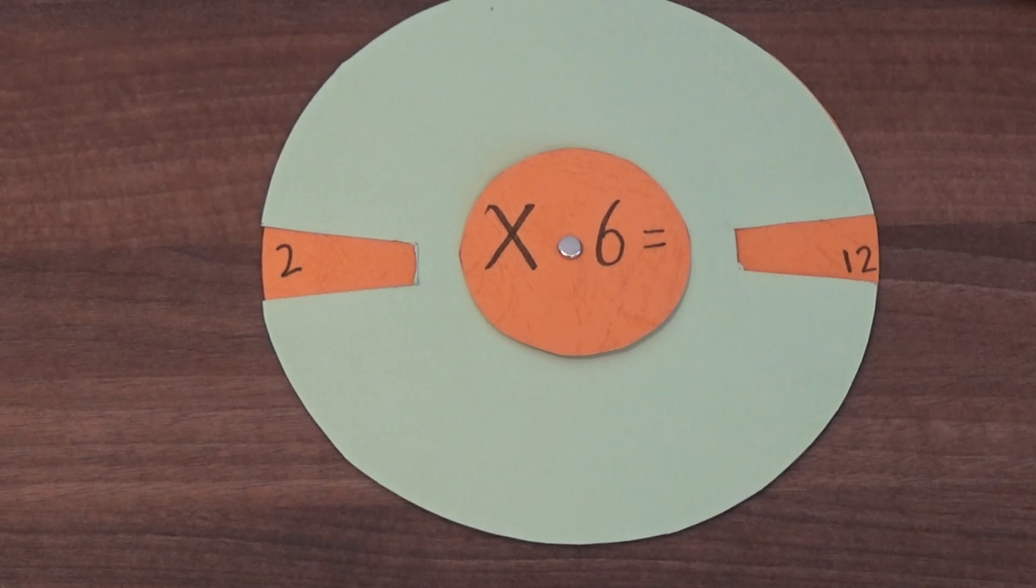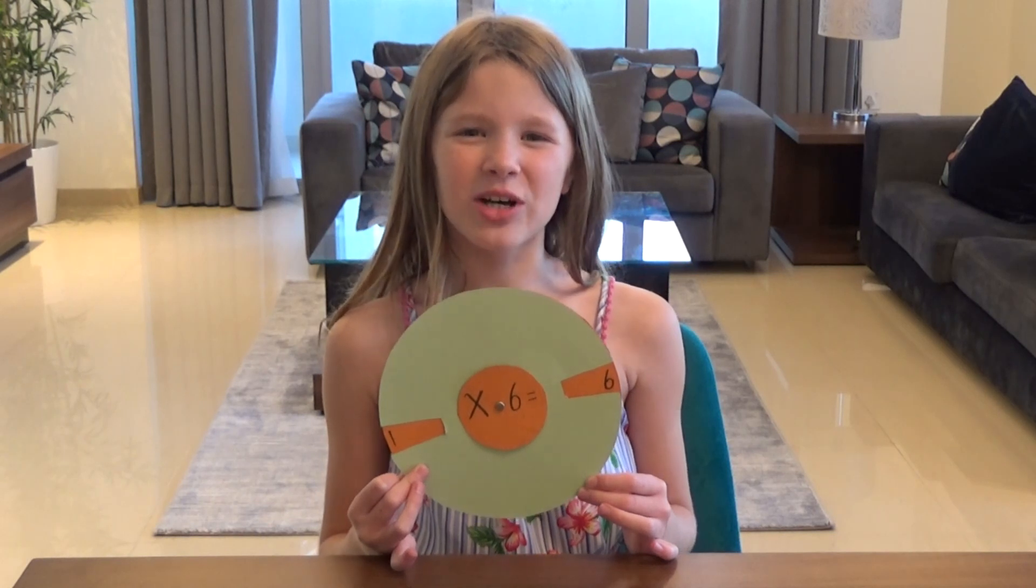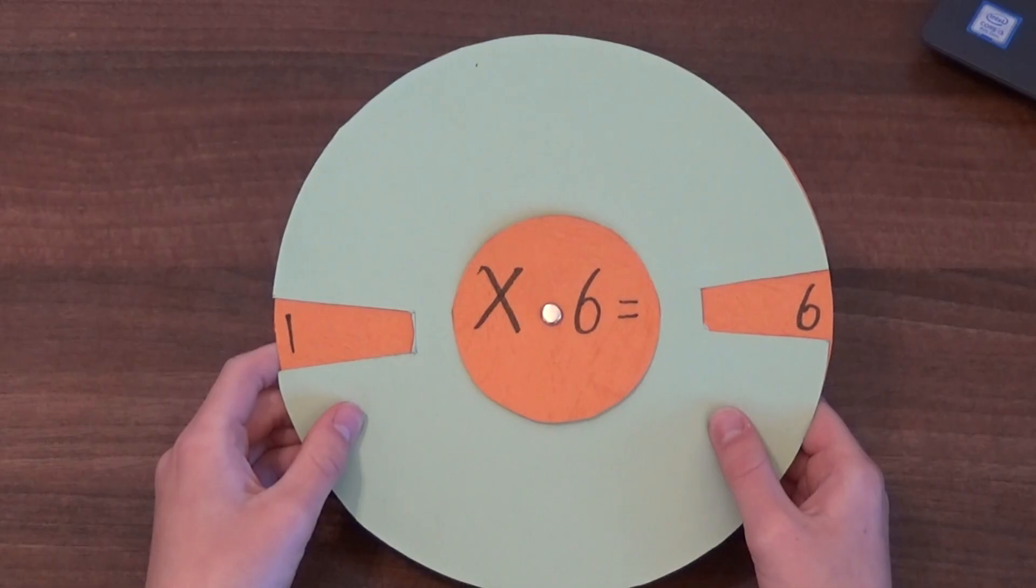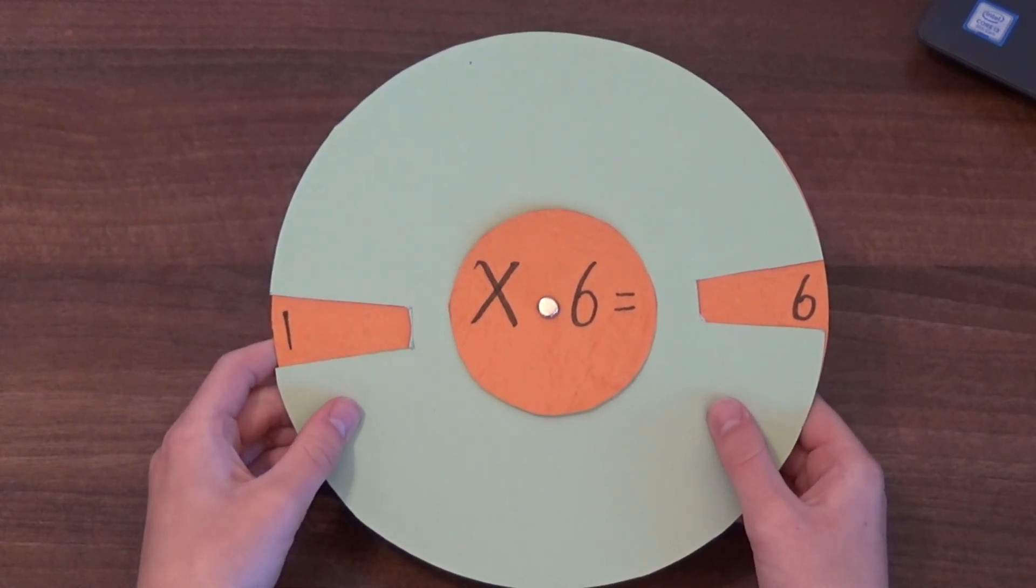I'm going to keep on doing this until I get to 12 times 6. Once I've written my numbers my multiplication wheel is ready. I now have the 6 times table up to 12 times 6.